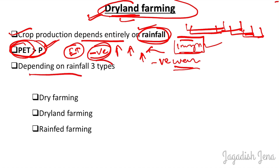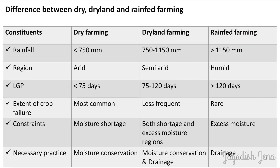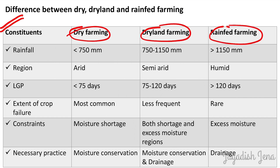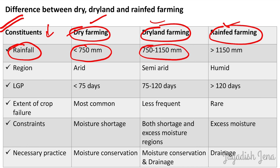Depending on rainfall, dryland agriculture is categorized into three types: dry farming, dryland farming, and rain-fed farming. Based on rainfall, farming is called dry farming when the rainfall of that locality is less than 750 mm. If rainfall is 750 to 1150 mm, it is called dryland farming. If rainfall is more than 1150 mm, it is called rain-fed farming. Based on region, dry farming is practiced in arid regions, dryland farming in semi-arid regions, and rain-fed farming in humid regions.